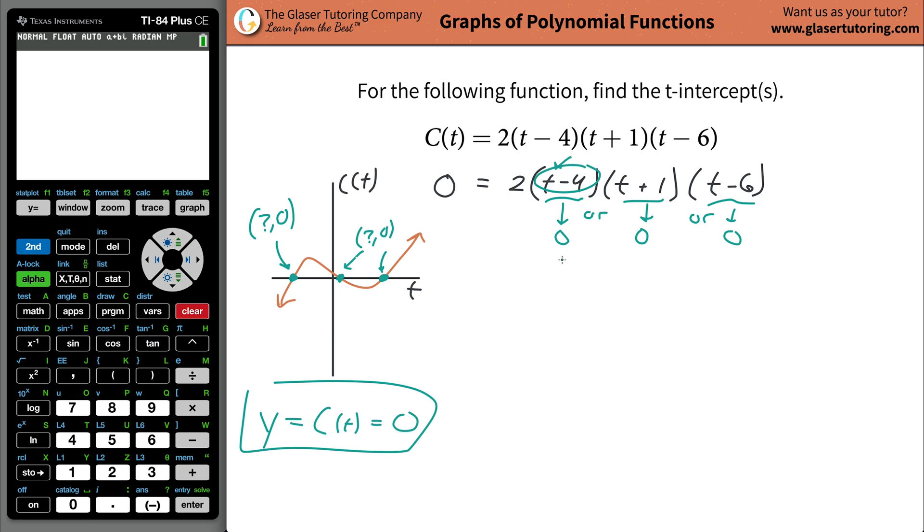T has to be four. I mean, you see that already. What does this T have to be in order for this whole term to go to zero? You might see it already.